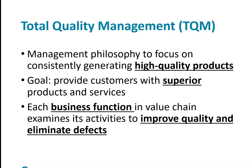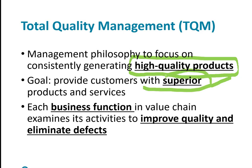One more concept before leaving chapter four is total quality management. Lean production systems only produce what is currently needed, so it's essential that production consists of high-quality products — you don't want waste. Management's philosophy focuses on minimizing errors, returns, and warranty issues. Customers expect superior products and services, and each business function in the value chain works to improve quality and eliminate defects. TQM, as it's called, is another important factor.